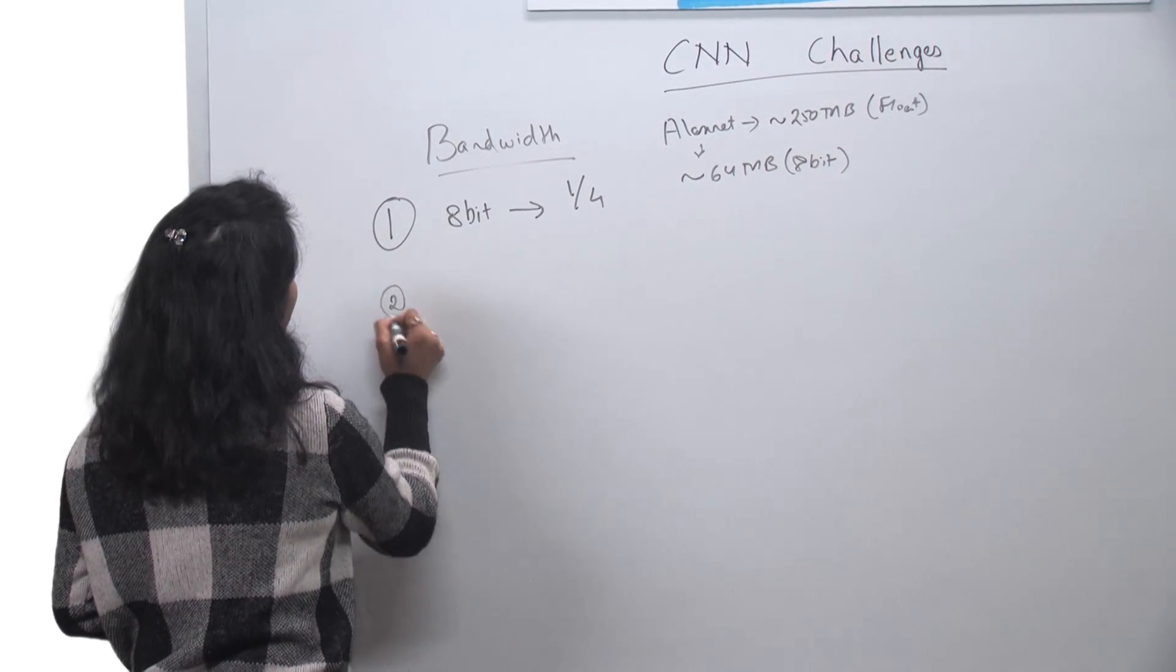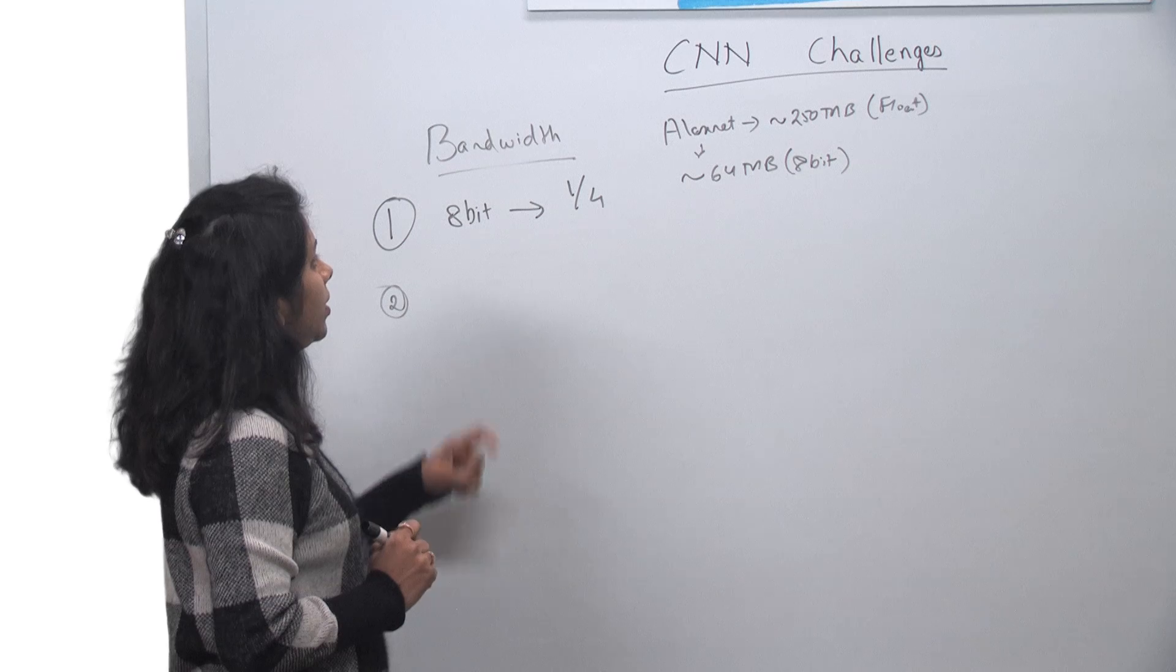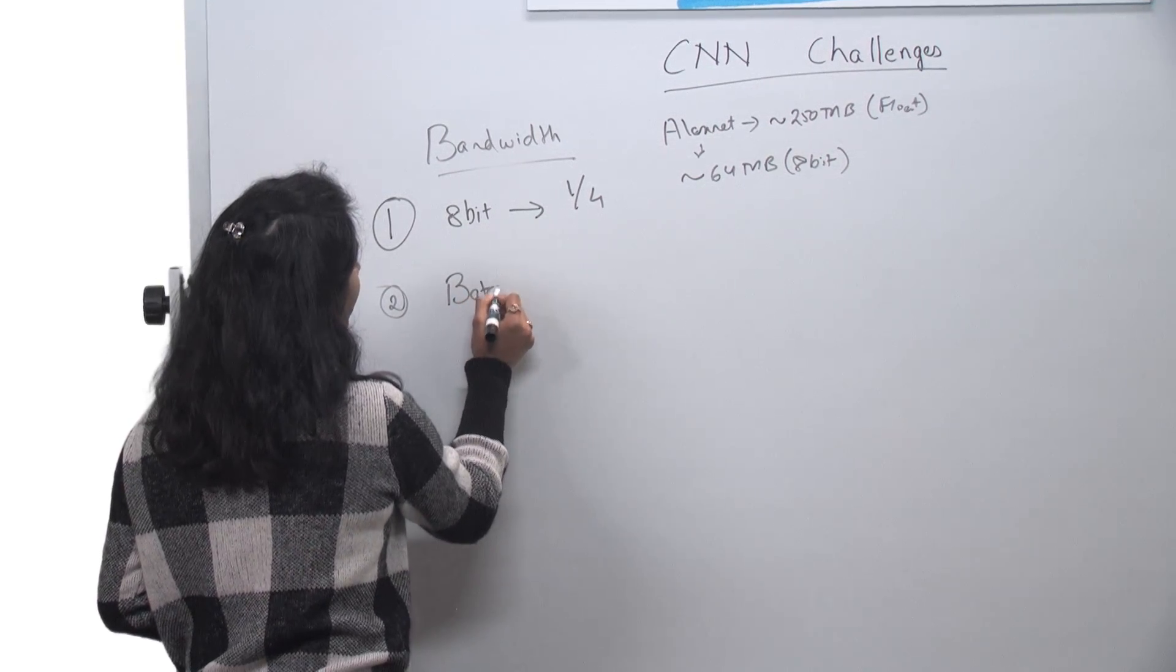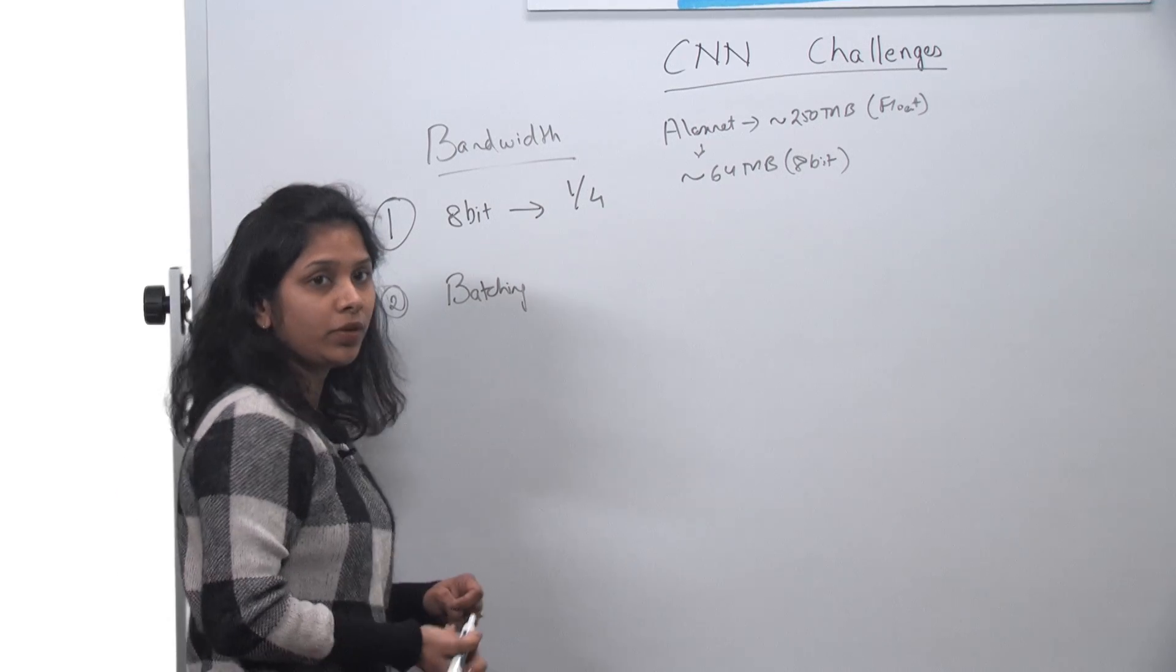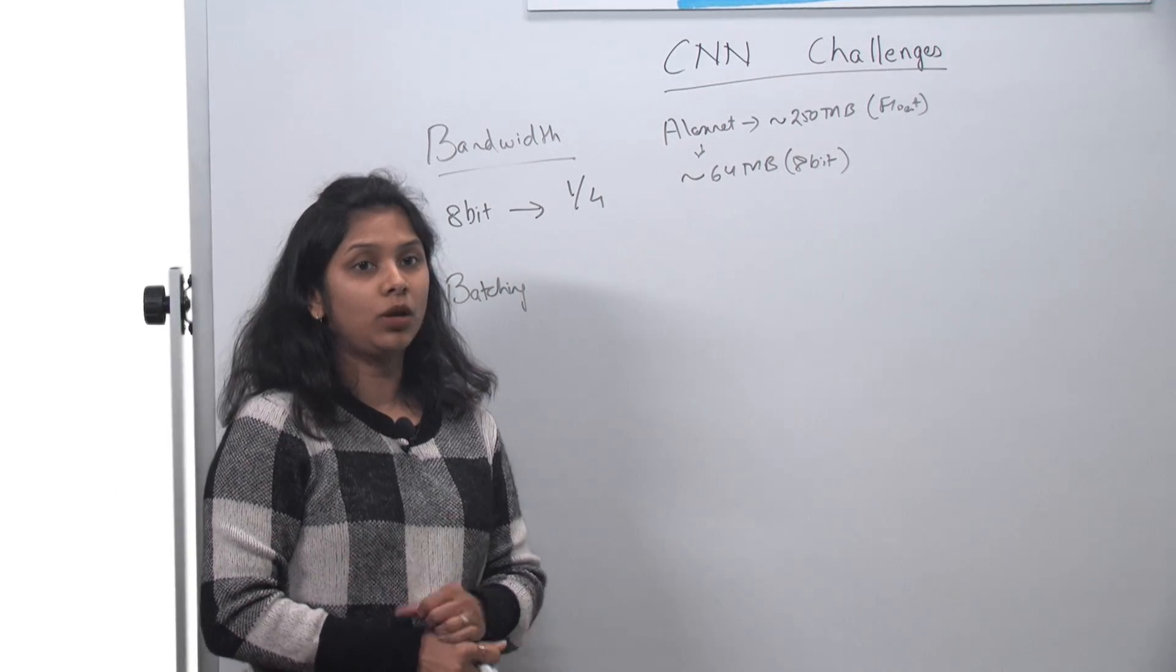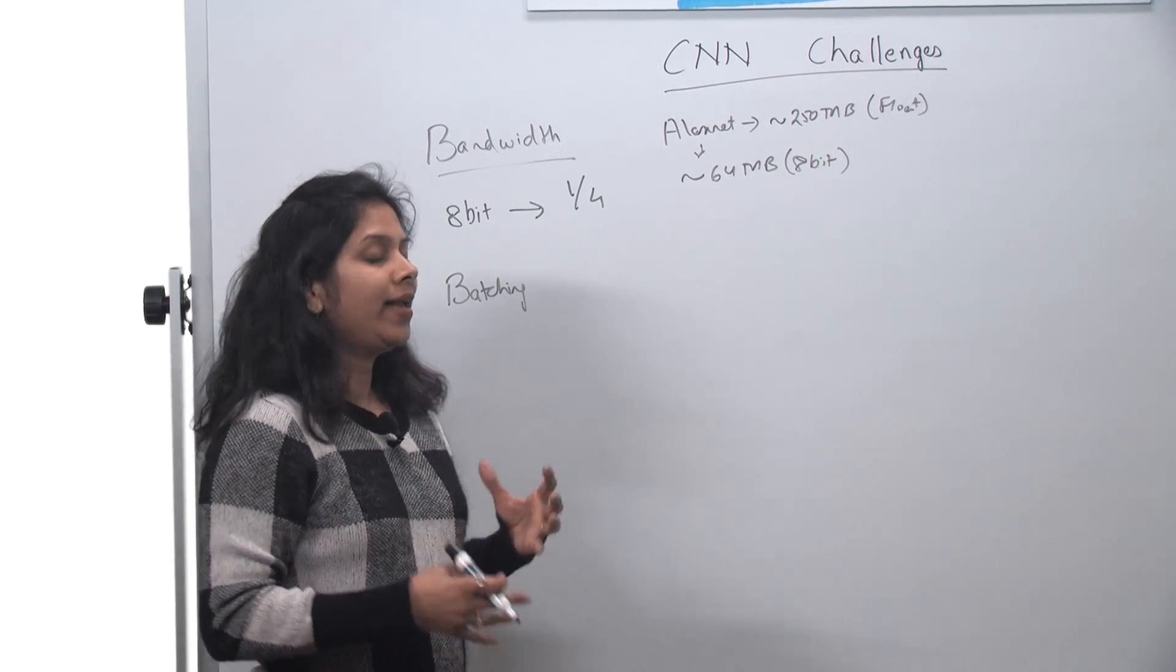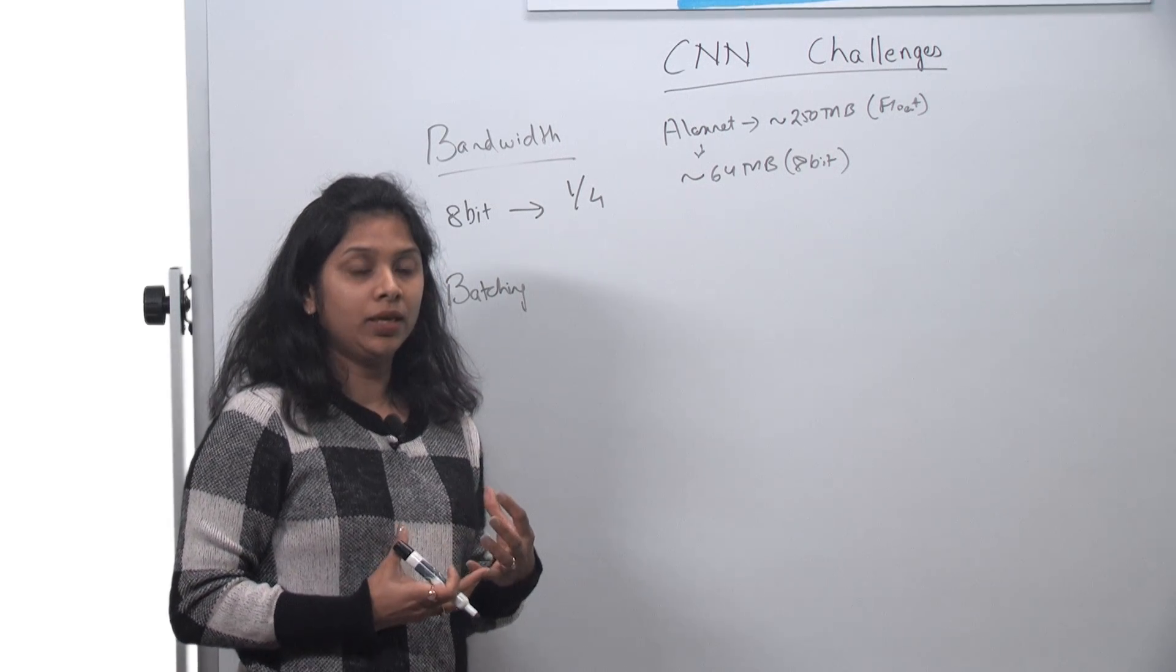Second approach which can be done is something called batching. So now batching is something which will be very dependent on the kind of network you have. If you have a network like AlexNet, which has a lot of fully connected layers into them, three of them, and they are heavily memory bound.